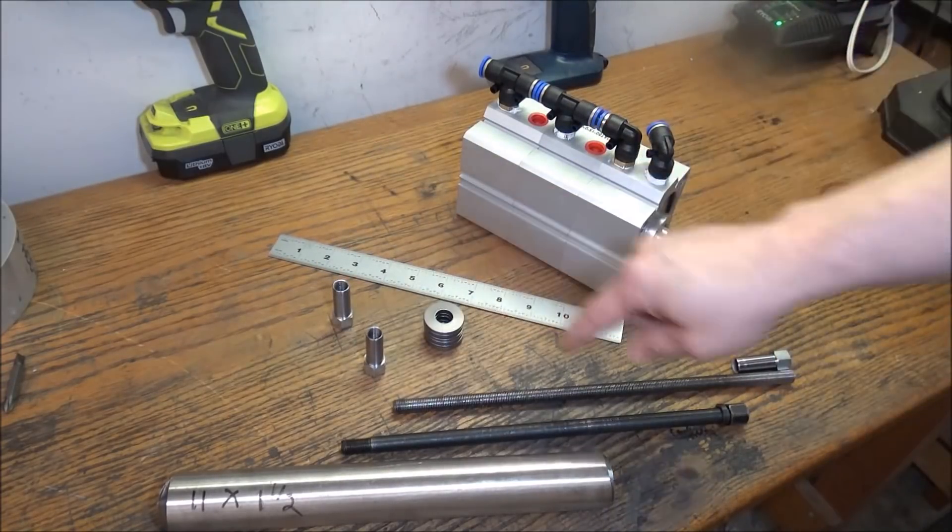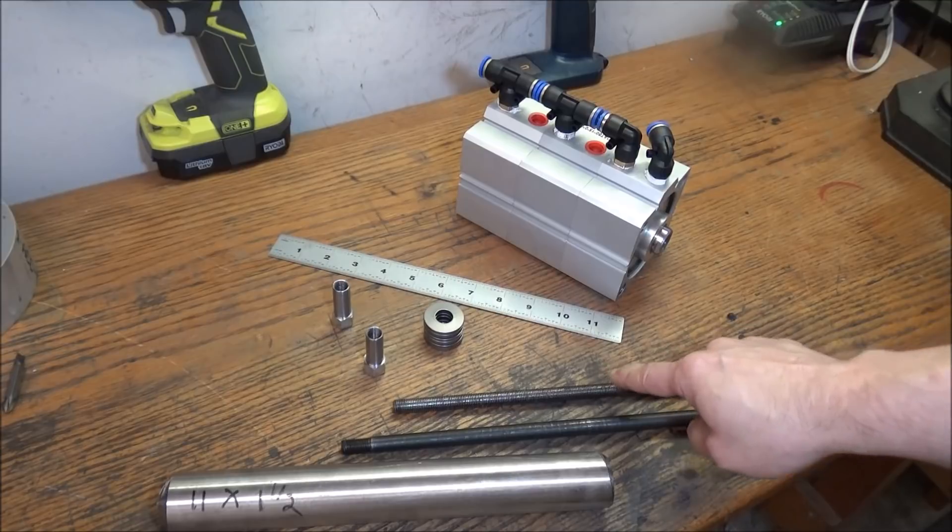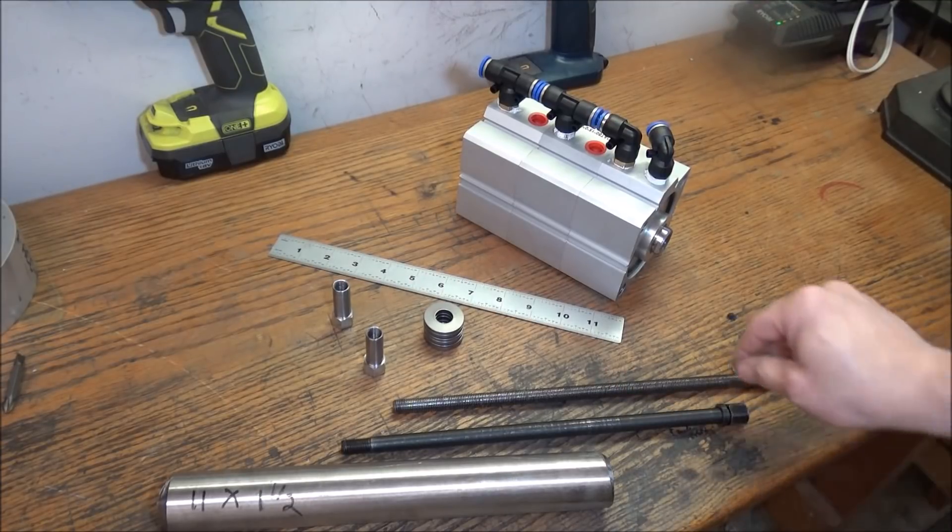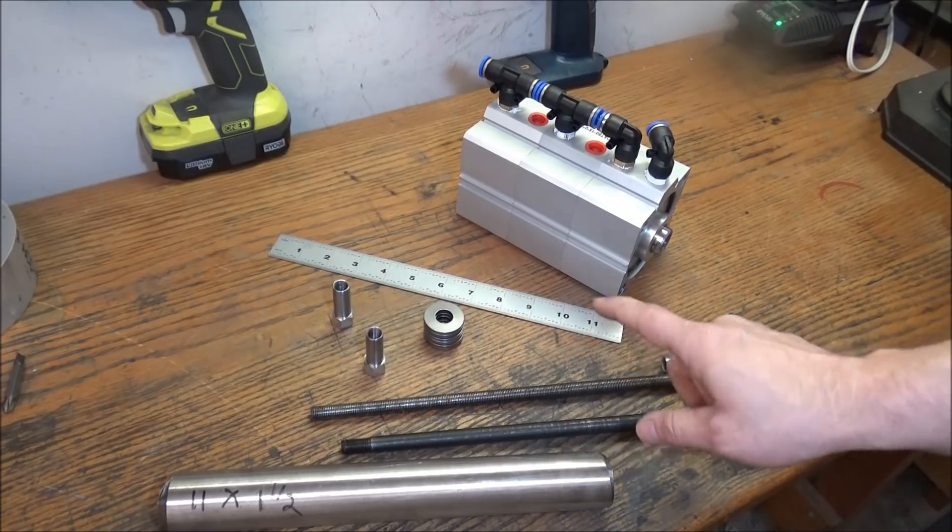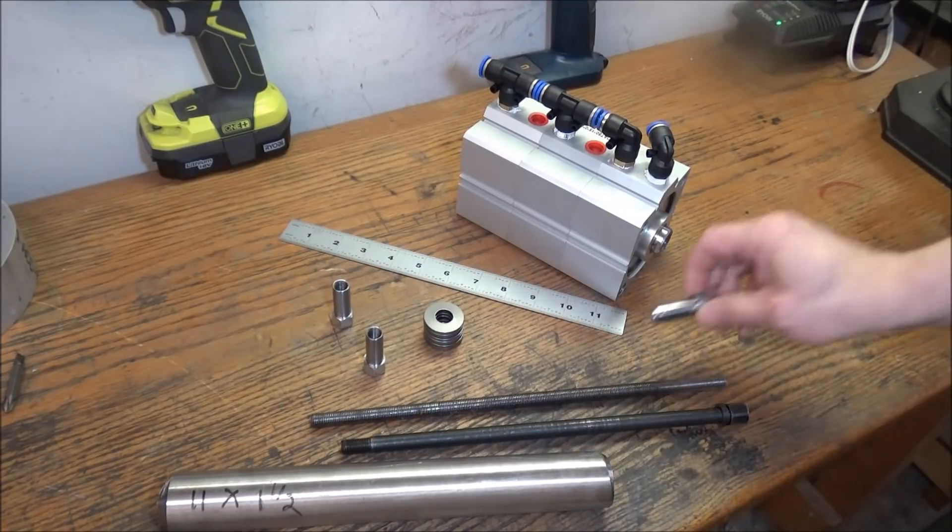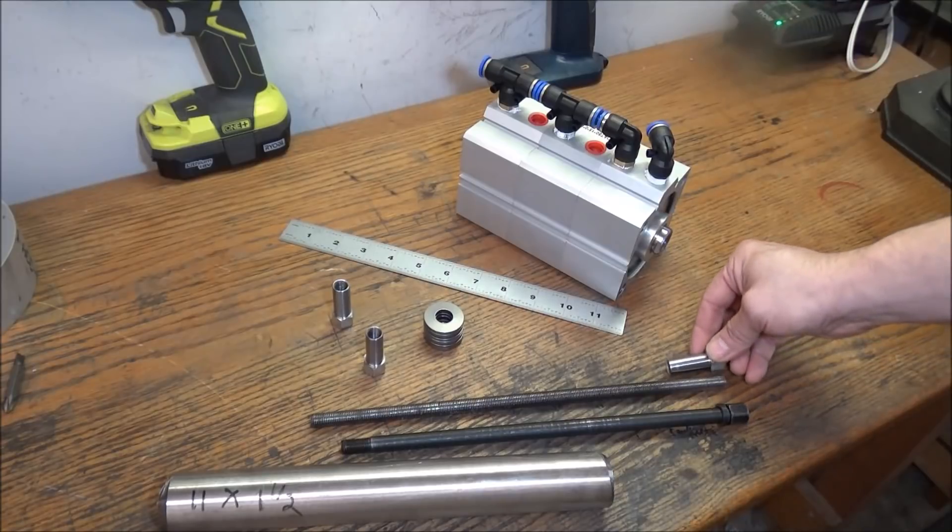So I've cut my threaded drawbar here, my 7/16 all thread. I've cut it to length, and so what I want to do is just screw this on.